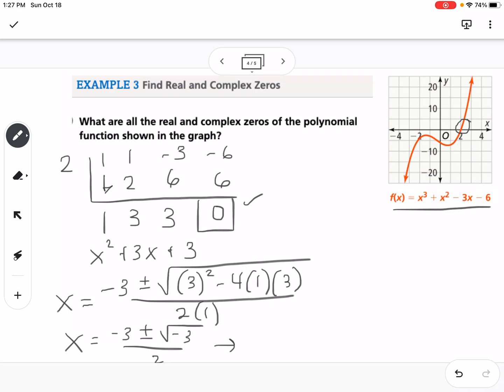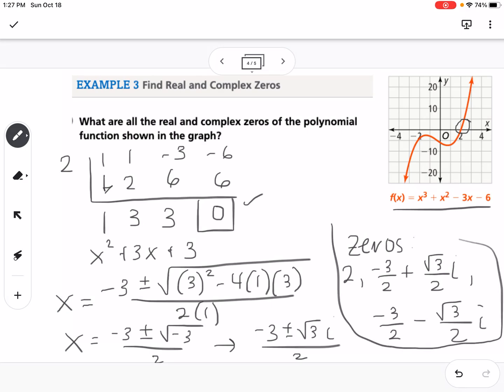Well, we don't want the negative underneath the square root, so we would write this as negative 3 plus or minus the square root of 3i over 2. So we can break that up into a real part and imaginary part as well. So our zeros would be positive 2, negative 3 halves plus the square root of 3 over 2i and negative 3 halves minus the square root of 3 over 2i. So those are all of our zeros for that polynomial.